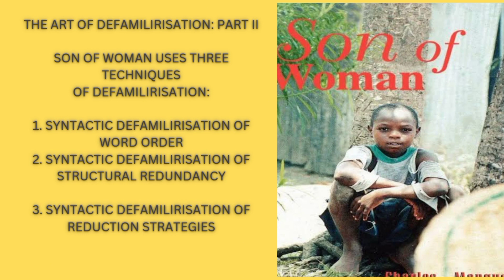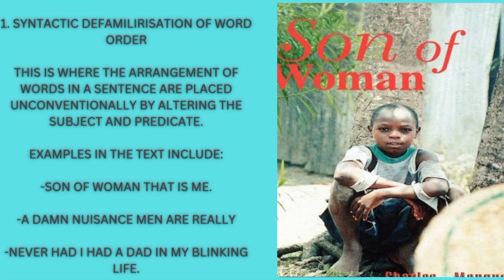Number one: syntactic defamiliarization of word order. This is where the arrangement of words in a sentence are placed unconventionally by altering the subject and predicate. Please get it right — a sentence is divided into two parts: subject and predicate. Examples in the text include: 'Son of woman, that is me — a dumb nuisance' and 'Men are really...'